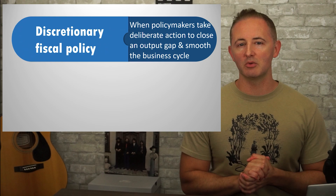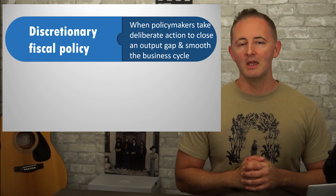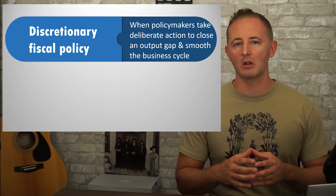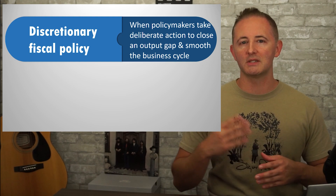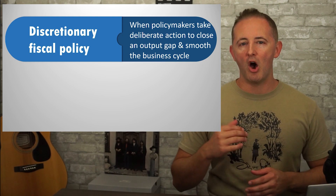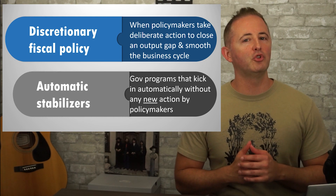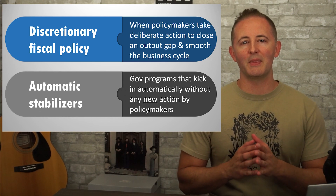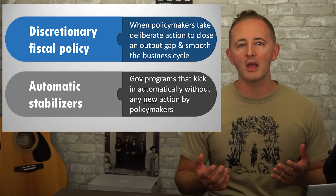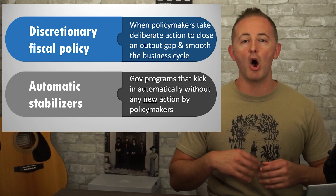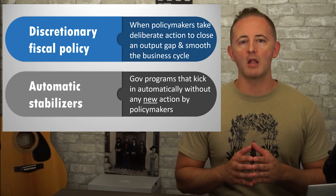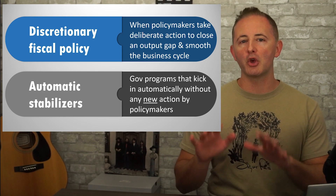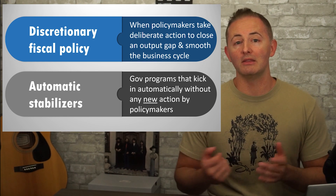Discretionary fiscal policy is what we dealt with in the previous video. It's when policymakers specifically take action to close an output gap and hopefully smooth out the business cycle. Automatic stabilizers, on the other hand, don't require any new action taken by policymakers. The idea is that there are programs or policy structures that kick in automatically when the economy enters into a recession or an inflationary gap without the current policymakers doing anything.